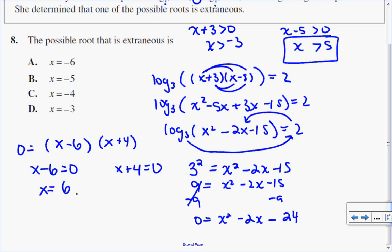So here x can be 6. Here x can be negative 4. Now my overarching restriction is that x is greater than 5, so this one here is the solution, but they're not looking for the solution.